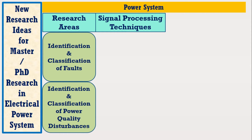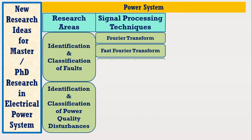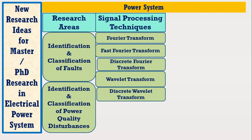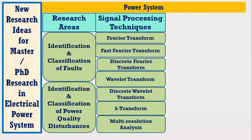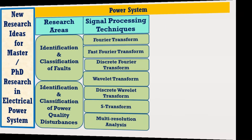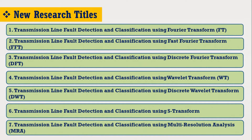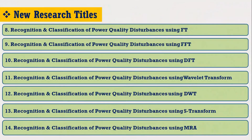These signal processing techniques may include Fourier transform, fast Fourier transform, discrete Fourier transform, wavelet transform, discrete wavelet transform, S-transform, multi-resolution analysis, or any other new signal processing technique. Based on these techniques for fault classification and power quality disturbances, various research titles can be considered for your research.